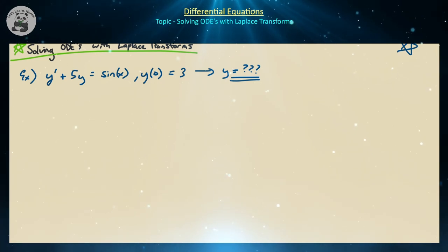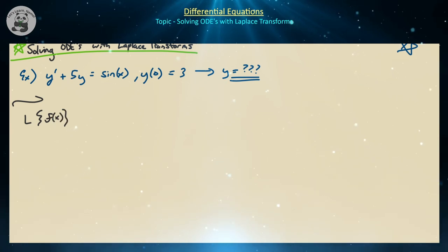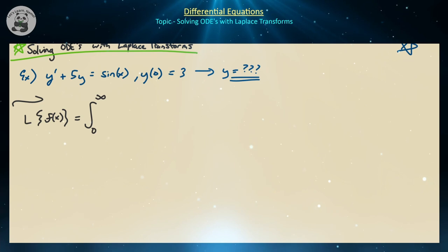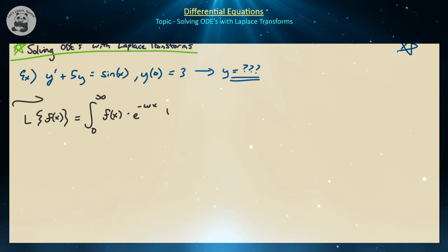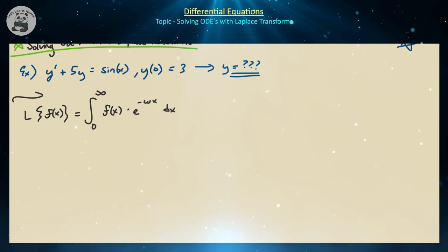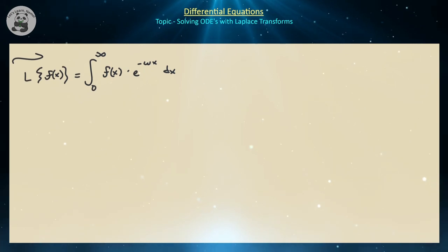In case you don't already know, the Laplace transform of some function f of x is defined as the integral from 0 to infinity of f of x times e to the minus omega x dx — what some people call an exponential kernel function.